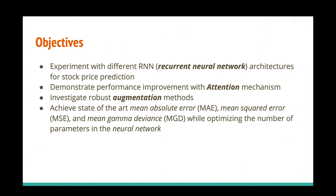This also makes the model as robust as possible against various noise, changes, or variance in the data. I plan to achieve state-of-the-art mean absolute error (MAE), mean squared error (MSE), and mean gamma deviance (MGD) — which is a different kind of loss measurement — while optimizing the number of parameters in the neural network. I focus on two parts: first, minimizing errors in my model as much as possible, and second, optimizing the parameters of the neural network to keep it simple.